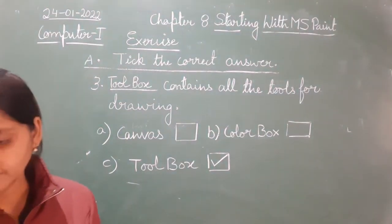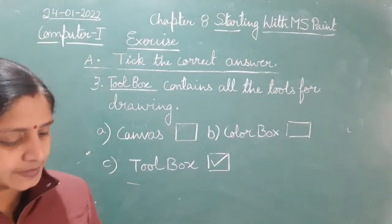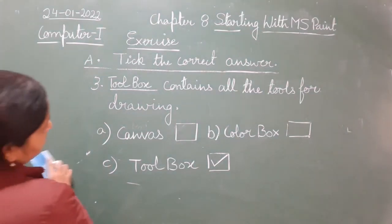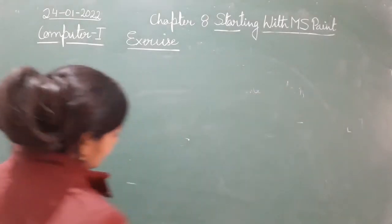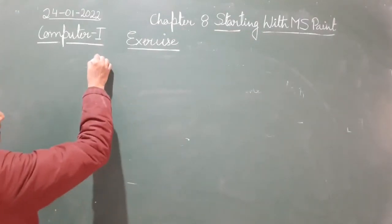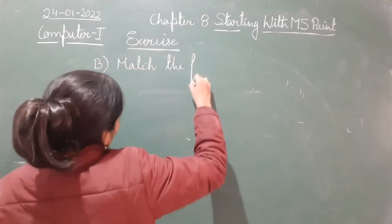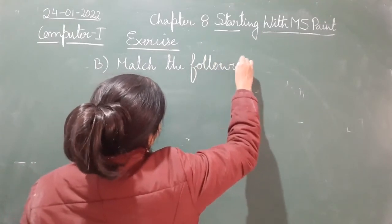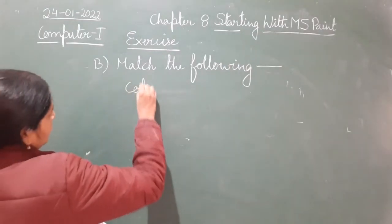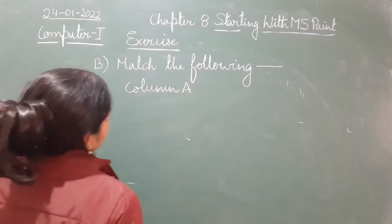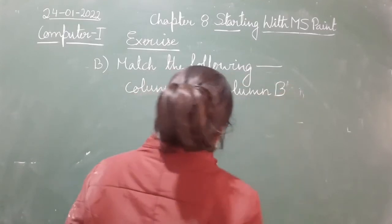Now in the second question — question number B — we have Match the Following. If you look at your book, you will see column A and column B. In column A we have pictures of different tools.